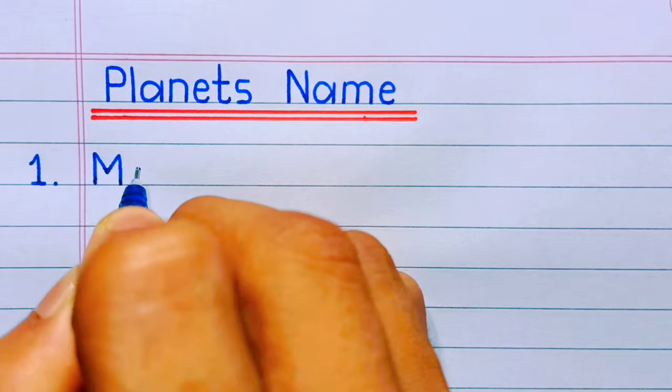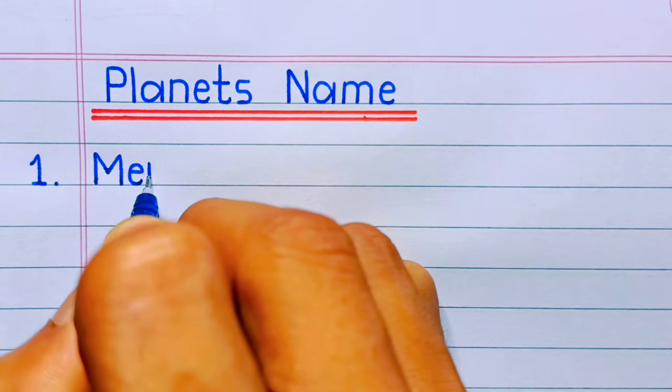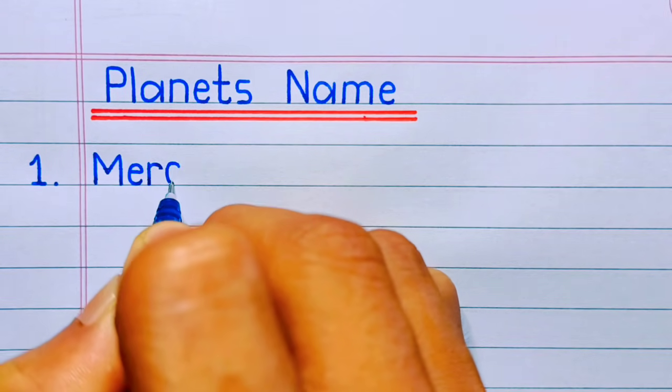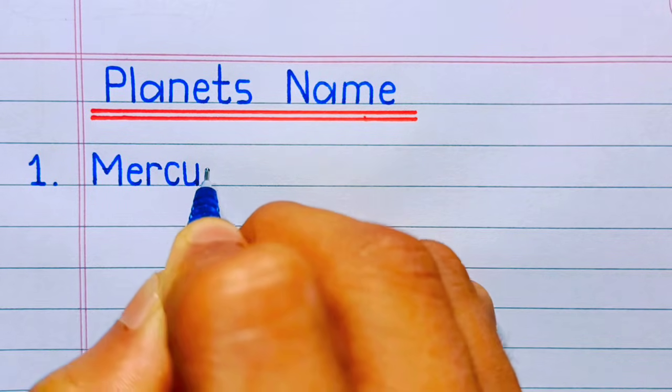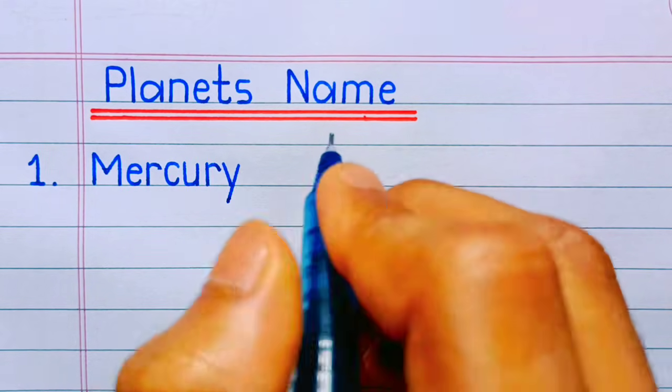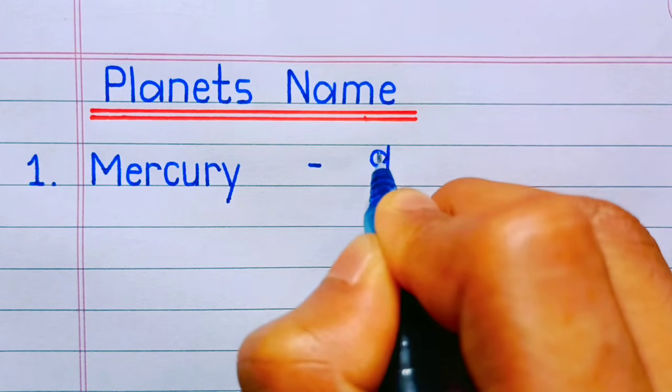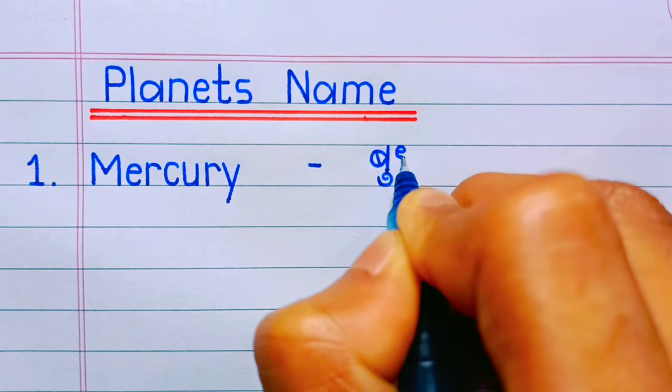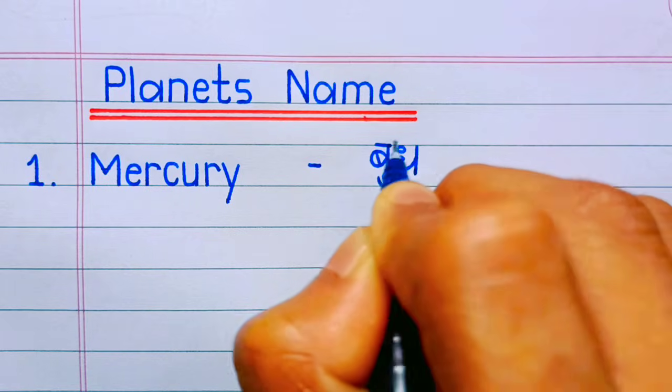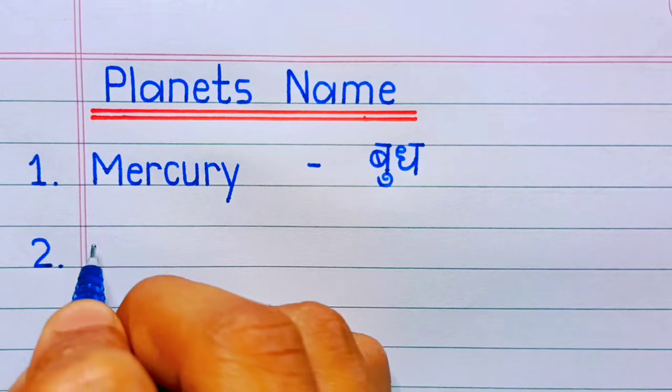First, number one: Mercury. M-E-R-C-U-R-Y, Mercury. Mercury means Budh.